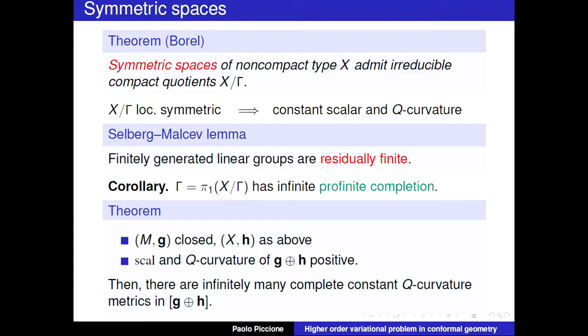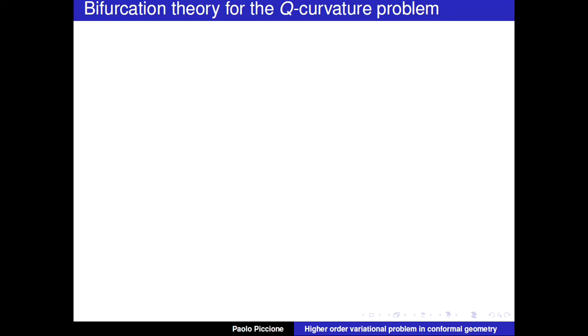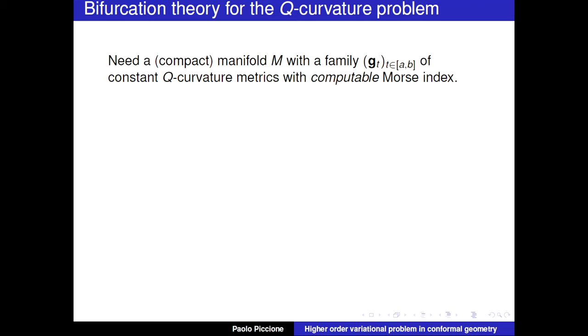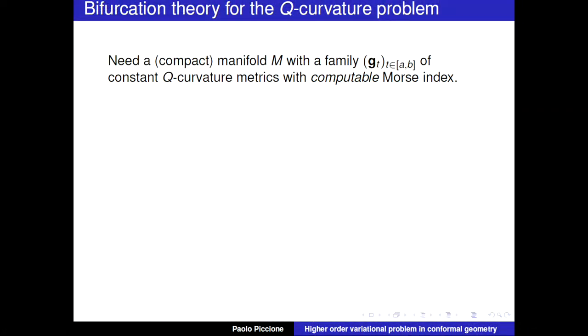The theorem we actually prove is more general: if you take a product of any closed manifold with a symmetric space, then you can find infinitely many complete constant Q curvature solutions. Now let me turn to another approach — bifurcation theory. We cannot do bifurcation theory in full generality; we need very special assumptions to control the spectral properties of the operators, since the spectral properties of the Paneitz operator in its general form are very hard to compute.